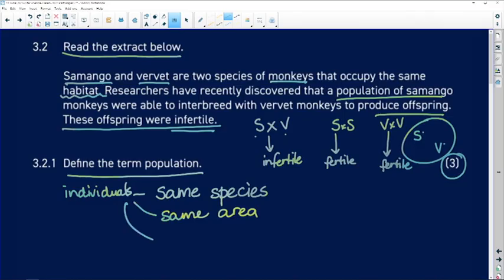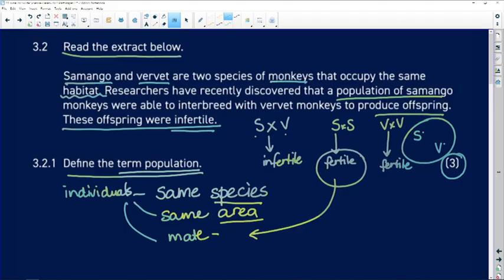And the third aspect to our definition of population is that they must, if they mate, they have the opportunity to mate because they're living in the same area. They can recognize each other as members of the same species. Maybe they sing the same song or do the same dance. If they mate, their offspring will be fertile.